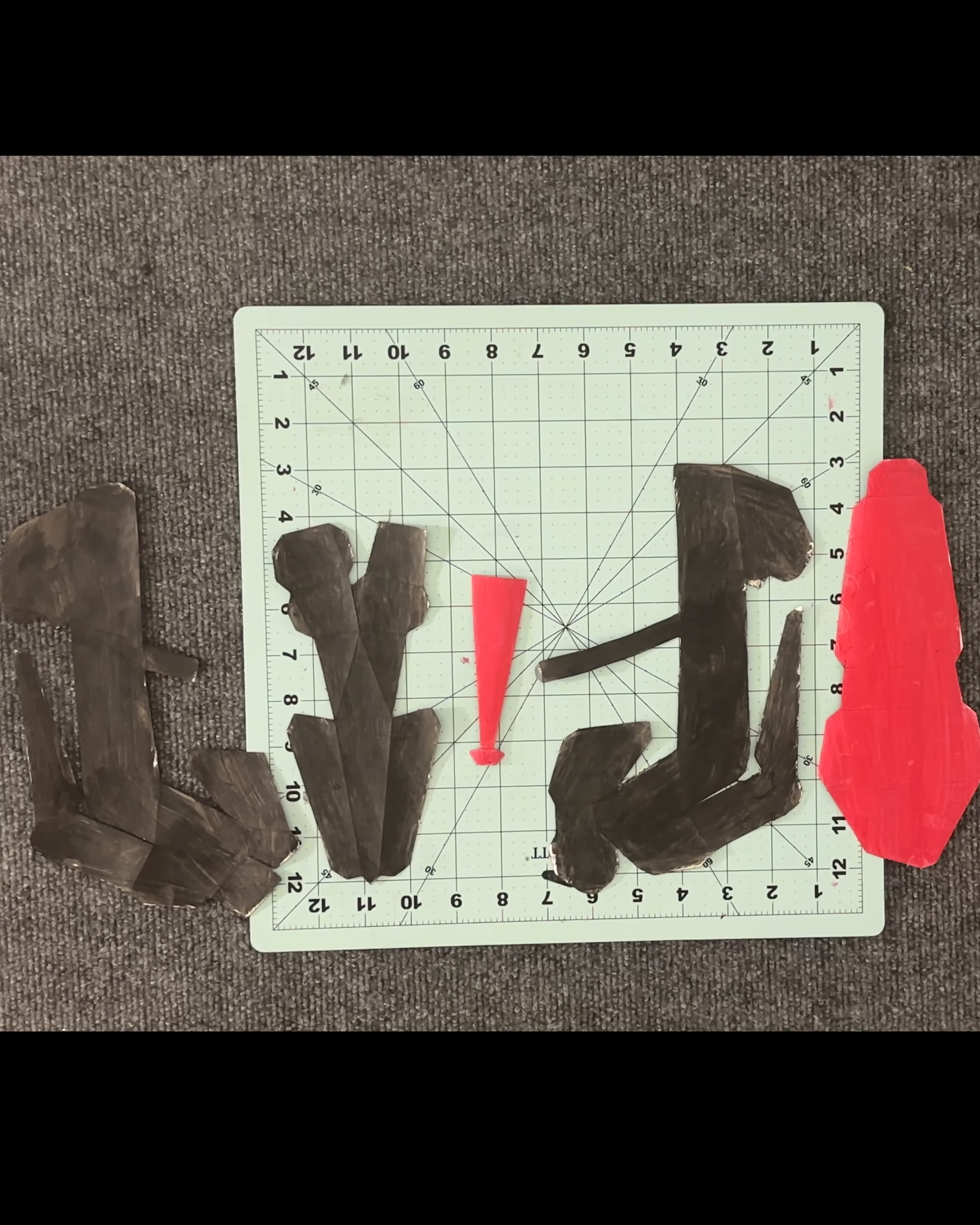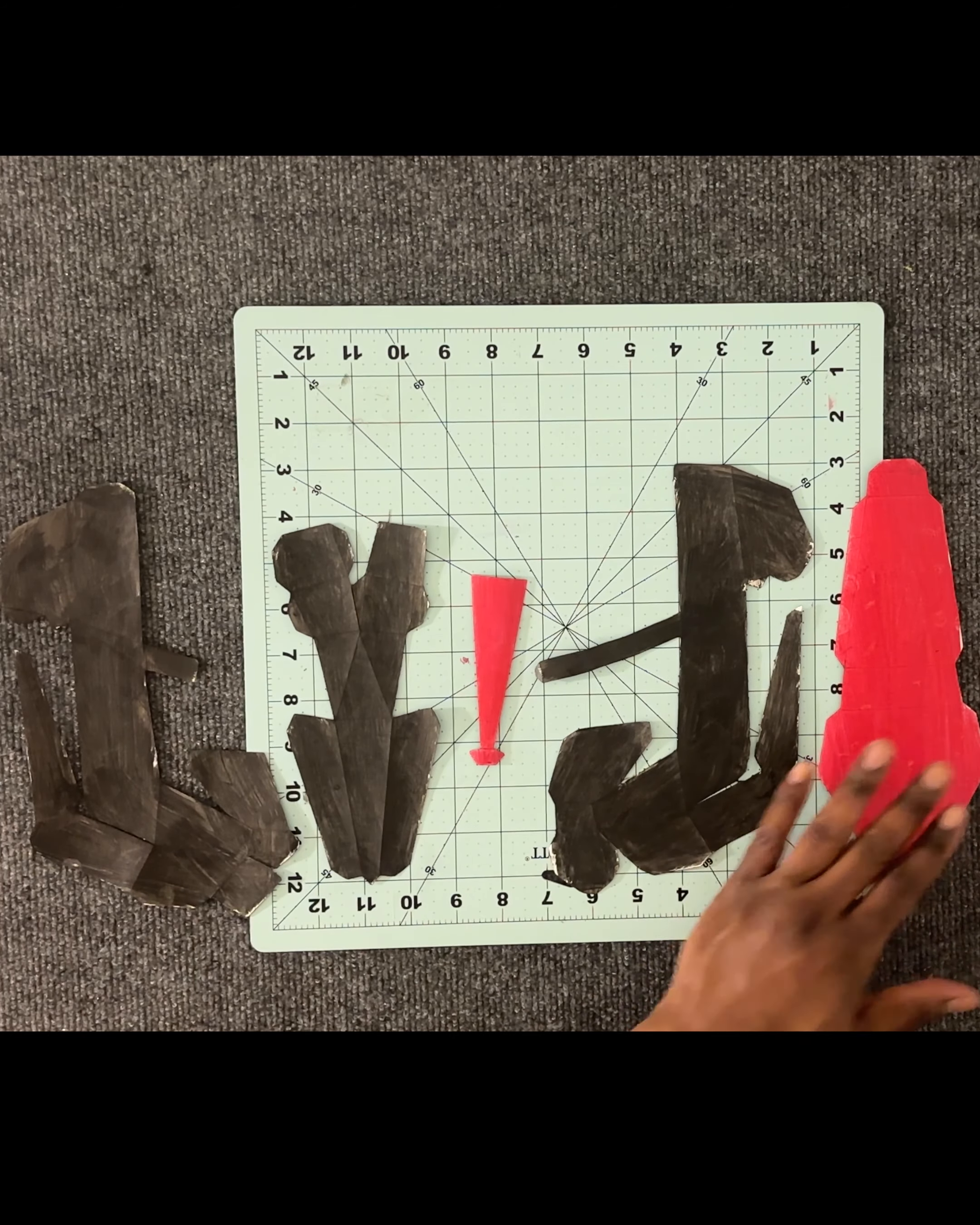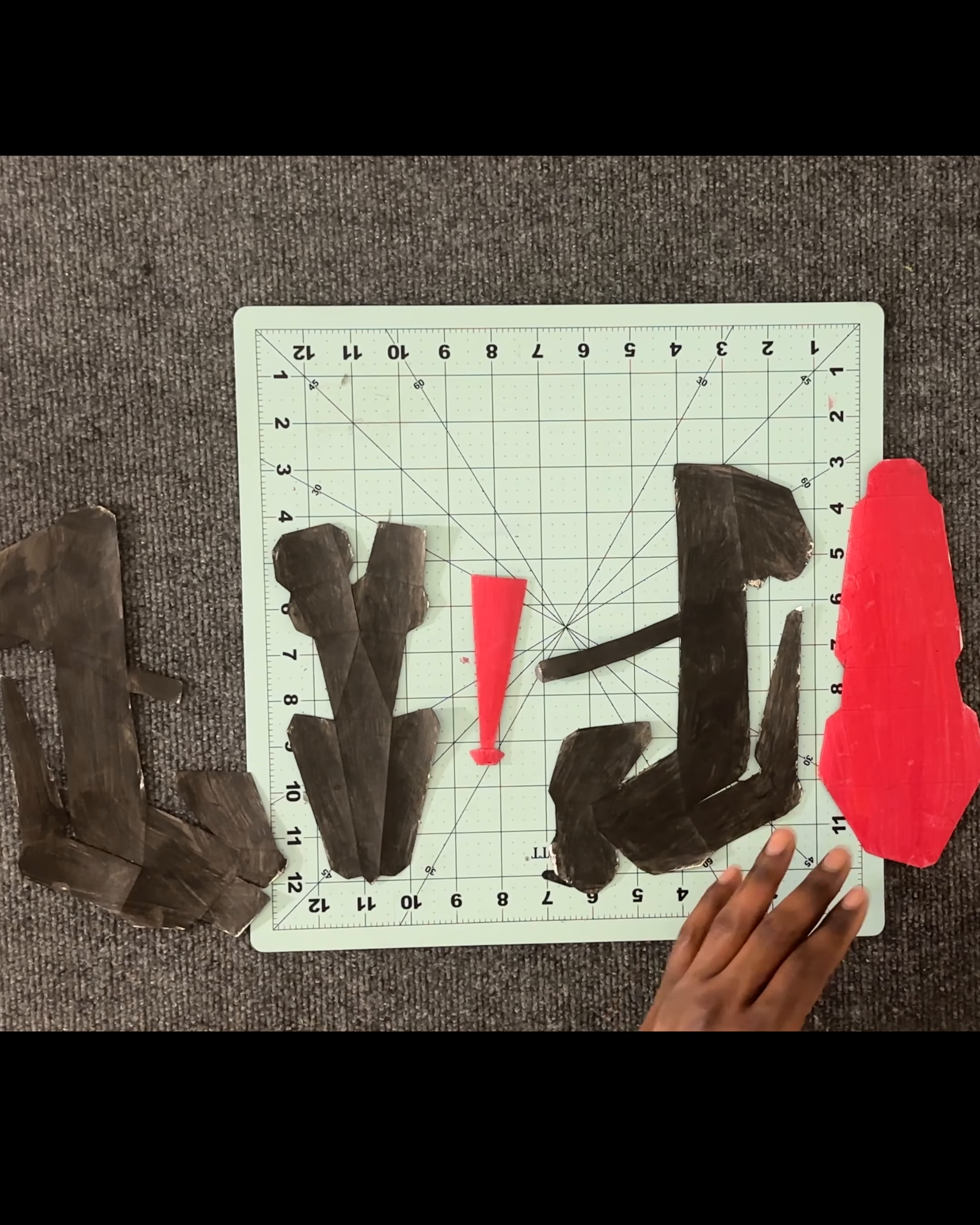So when you're done, if your pieces are laying out just like this, then you know all this is gonna be the outside and everything underneath is gonna be the inside, so you know you got your format right.